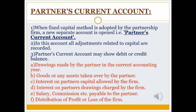The second account under Fixed Capital Method is Partners Current Account. In this account all adjustments related to capital are recorded and it may show a debit or credit balance. The adjustments recorded here are: A) drawings made by the partner in the form of cash, B) drawings in the form of goods or assets, C) interest on partners capital allowed by the firm, D) interest on partners drawings, E) salary or commission payable to the partner, and F) the distribution of profit or loss transferred from the Profit and Loss Account.